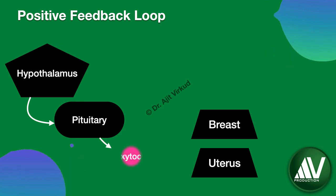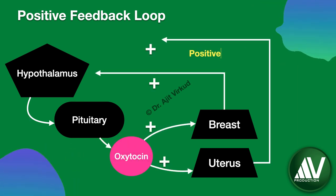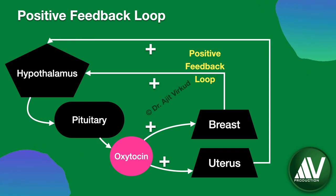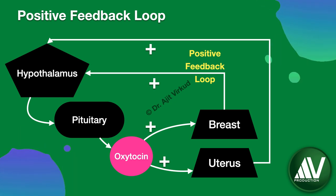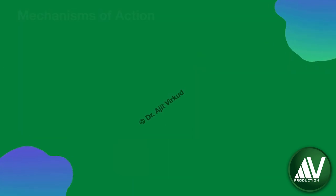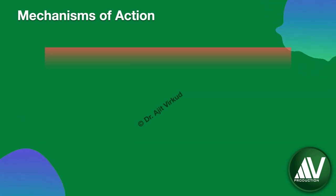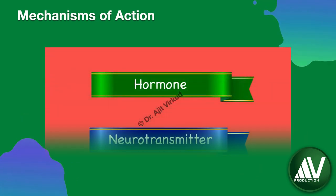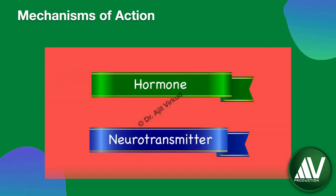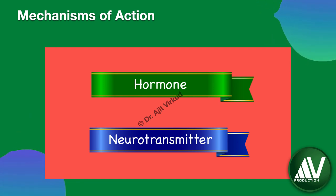One more important thing: in endocrinology, the only example of a positive feedback loop is the release of oxytocin. All other hormones released have a negative feedback loop. Oxytocin acts both as a hormone and as a neurotransmitter in the brain, and it has many different actions in the body which I will now consider in detail.